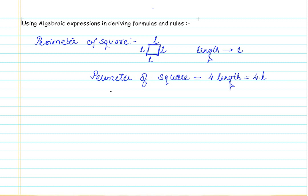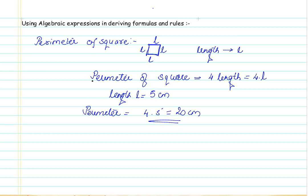Now, if we know the length L — for example, L equals 5 cm — then the perimeter becomes 4 times 5, which is 20 cm. This way we can find the value for the perimeter of a square: first by deriving the algebraic expression for the perimeter, then substituting the known length to get the final numeric value.